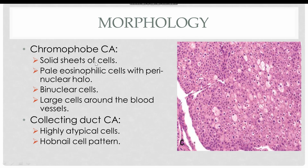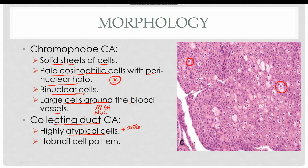The less common types include chromophobe carcinoma and collecting duct carcinoma. In chromophobe carcinoma, the pattern is solid sheets of pale eosinophilic cells with perinuclear halos around the nuclei; cells are often binucleate, and large cells are present mostly around blood vessels. Mitotic bodies and necrosis are present. Collecting duct carcinoma is very rare and is composed of highly atypical epithelial cells derived from the collecting ducts, forming a hobnail pattern.